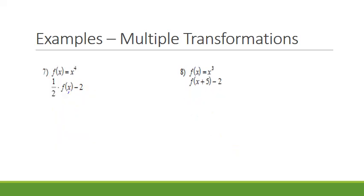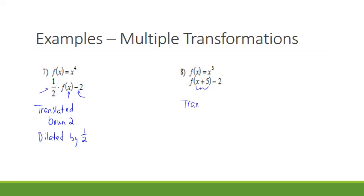For this one, nothing is happening inside the parentheses with x, so there is no horizontal shift, but there is a vertical shift — it's been translated down 2. There's also a number in front, so it's been dilated by one half. Looking at this next example, we have a horizontal shift — it's been translated left 5 — and there's also a vertical shift, so it's been translated down 2.